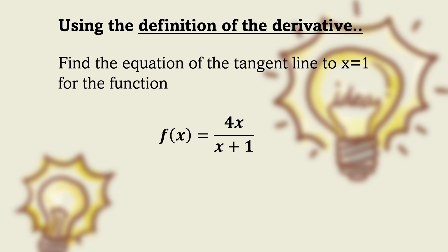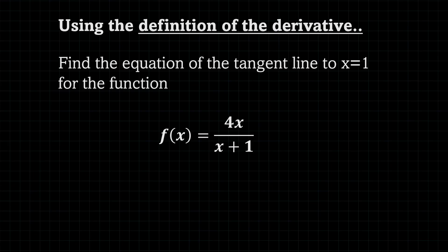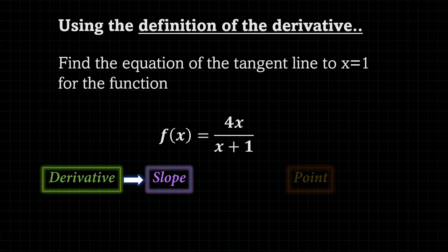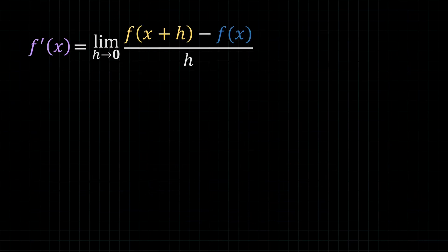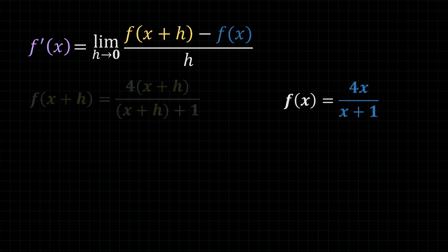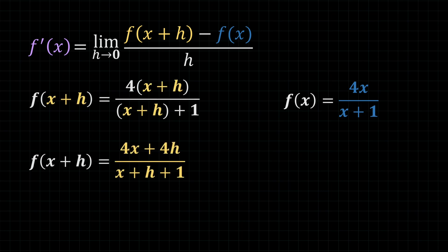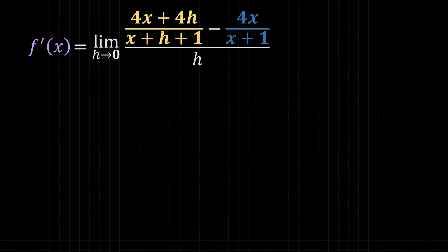Next, we have a rational function where we have x in both the denominator and the numerator. In a rational function, just like other functions, our thought process is exactly the same: find the derivative, then the slope, then the point, and plug them into the point-slope form. Looking at the definition of the derivative and focusing on the numerator, f of x is given to us for free. To find f of x plus h, we substitute x plus h into where x is, then simplify. We can plug both of these into the limit, which makes it look like this.